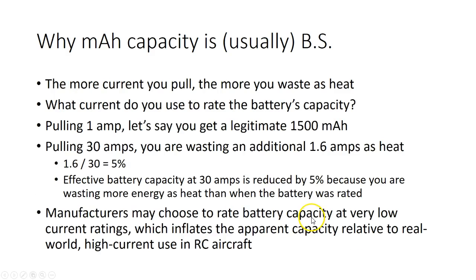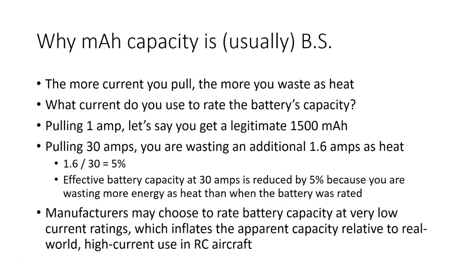And what that means is: what current do you use when you rate the battery's capacity? If you're pulling 1 amp, you get a legitimate 1500 milliamp hours. But if you're pulling 30 amps, you waste an additional 1.6 amps as heat — which is 5% more — meaning that at 30 amps you're going to have about 5% less capacity than the battery was rated for.